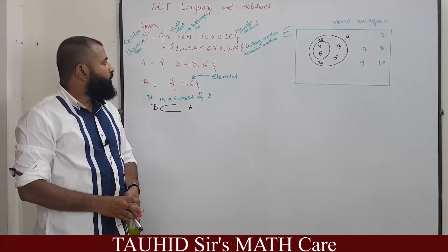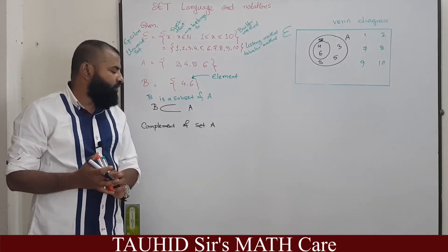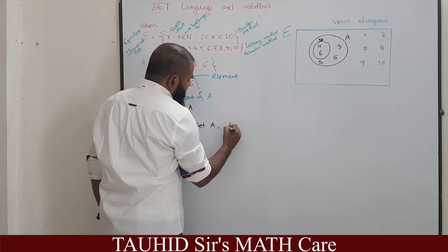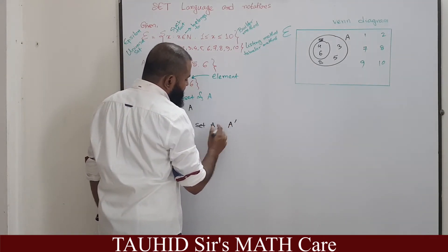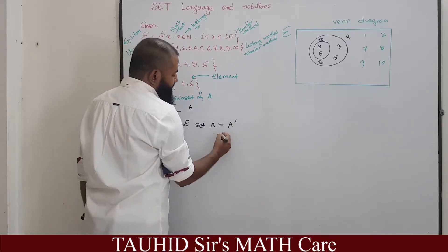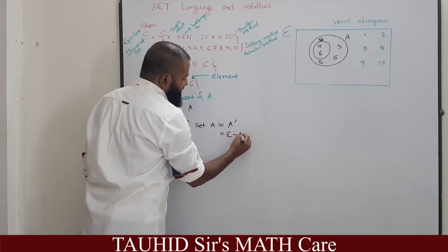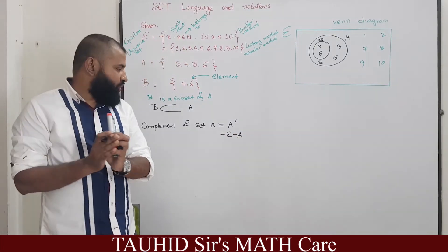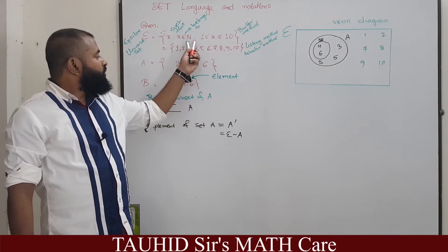Now look for another set, complement of a set A. It is called A prime. Complement of set is pronounced as A prime. It means epsilon minus A. If we remove all the members of A from the universal set, we get the complement of that set.